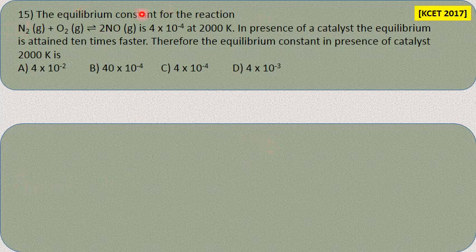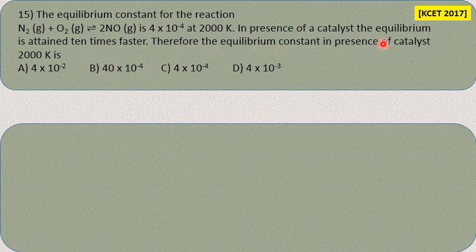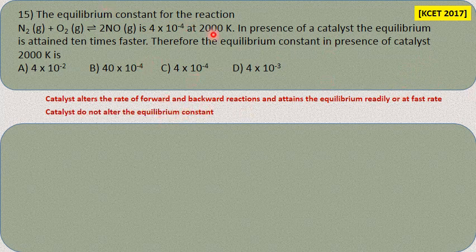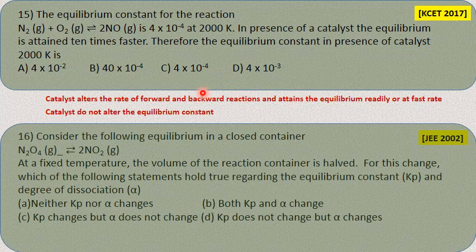Now let us see more questions from previous examinations. For the reaction N₂ + O₂ ⇌ 2NO, the equilibrium constant is 4 × 10⁻⁴ at 2000 Kelvin. In the presence of a catalyst, equilibrium is attained 10 times faster. What is the equilibrium constant at 2000 Kelvin in the presence of the catalyst? A catalyst increases both forward and backward reaction rates equally, helping attain equilibrium faster, but it does not change the ratio of the two rates. Therefore, the equilibrium constant remains unchanged at 4 × 10⁻⁴.